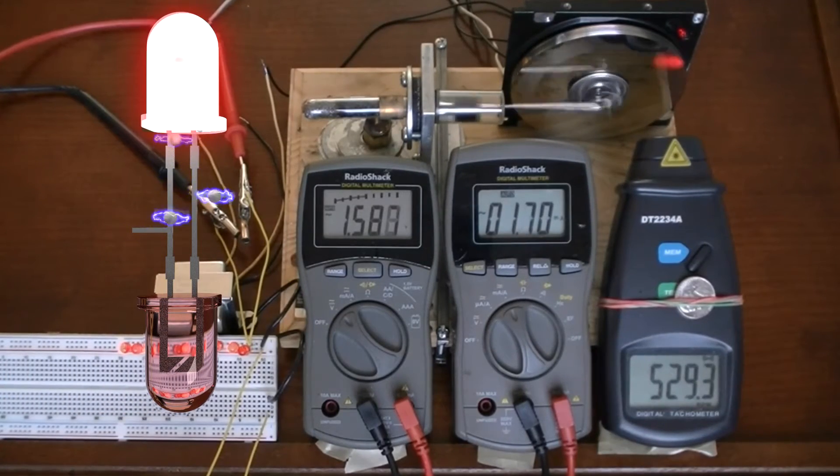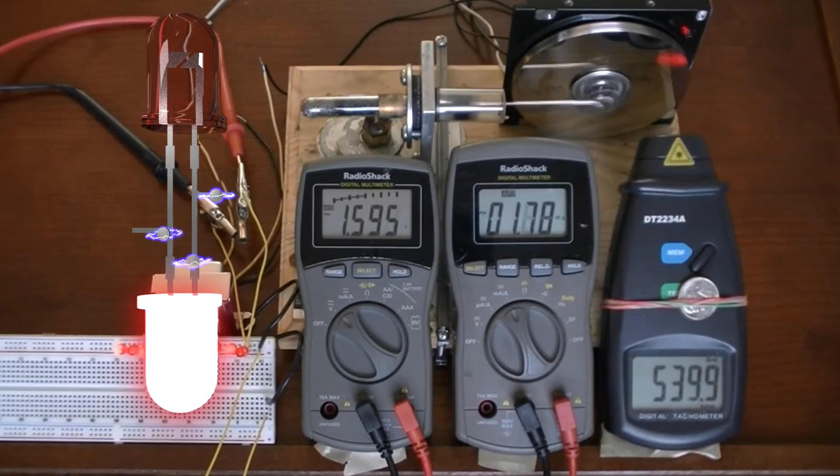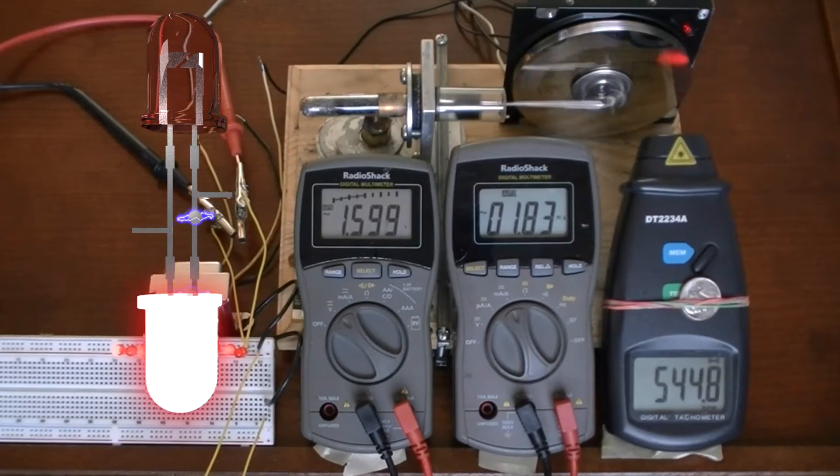Alternating current means the electricity flows in one direction, stops, then flows in the opposite direction. This happens many times per second.